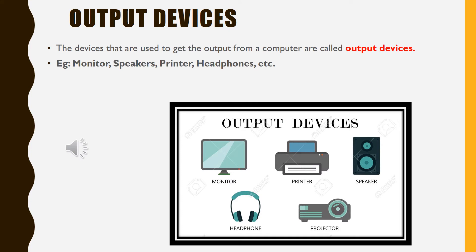Remember one thing: if input devices allow us to enter data into the computer, output devices allow us to see the data or get the output from the computer. For example, we have monitors, speakers, printer, headphones, etc. In the picture you can also see projector, headphone, printer, etc.